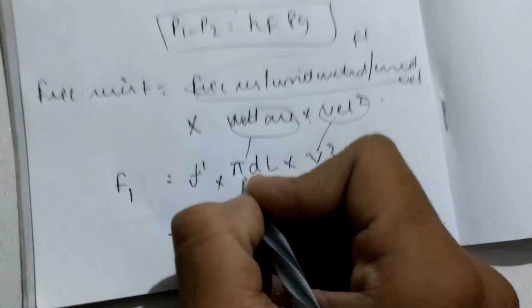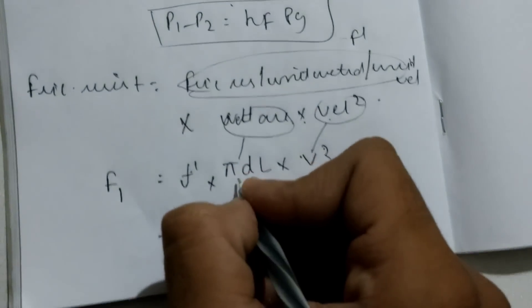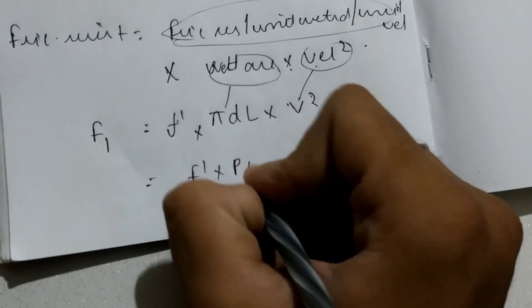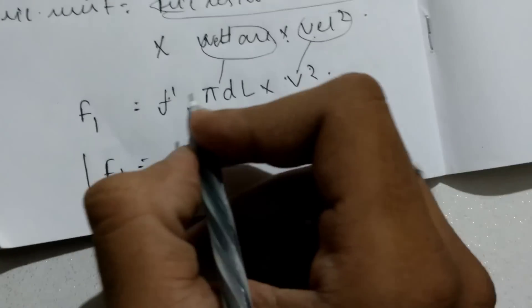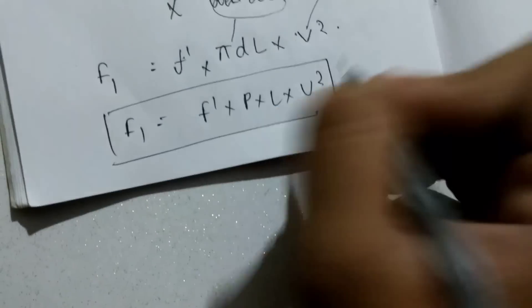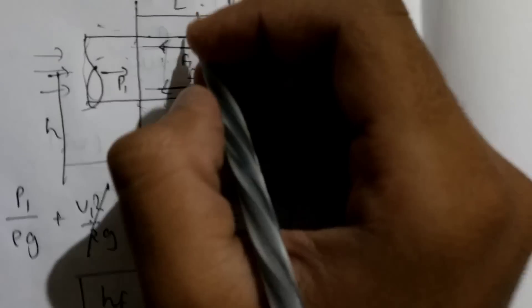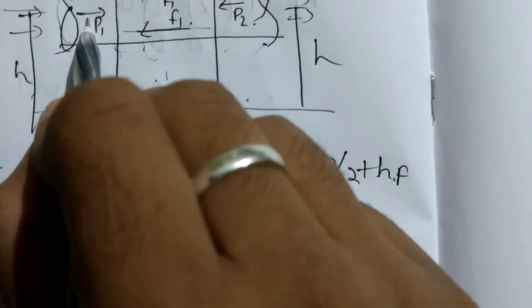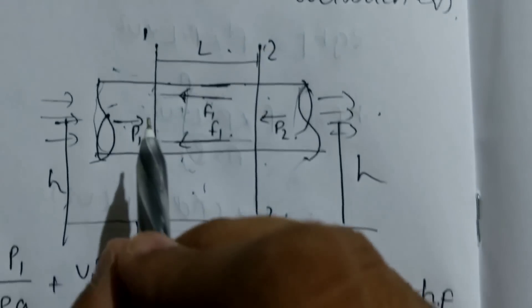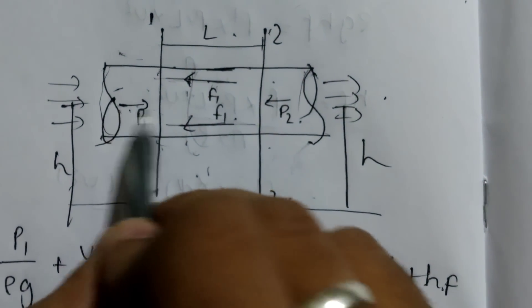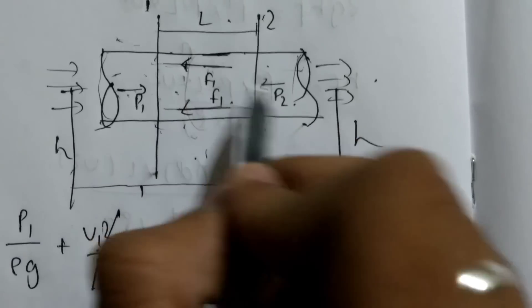We can write F1 = F' × P × L × V², where P is the perimeter π·D. Now we come back to the pipe and apply the equilibrium condition: all forces acting to the right must equal the forces acting to the left.